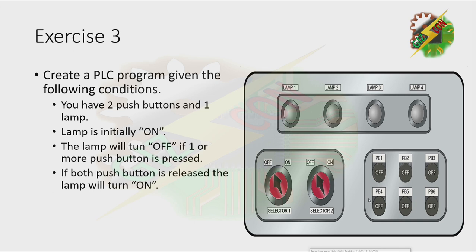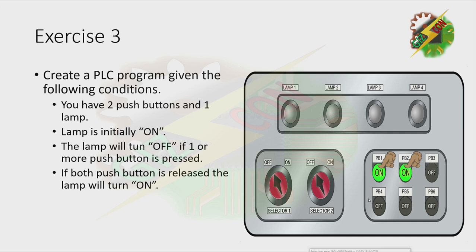Let's have our demonstration. The lamp is initially on. When I push push button 1, the lamp will turn off. When I release the push button, the lamp will turn on again. When I press push button 2, the lamp will turn off again. When I release push button 2, the lamp will turn on again. Then when I press both push button 1 and push button 2, the lamp will turn off.